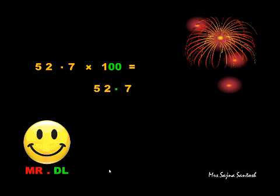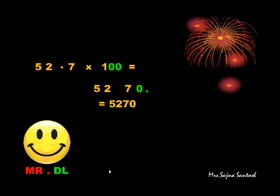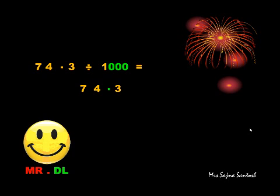Fifty-two point seven multiplied by hundred. Again, multiplication — I'll be jumping to the right, and two friends, two zeros in hundred, so I have to jump twice. But here you can see I have only one place to jump. As I told you, my friend zeros will come to help me when I don't have enough place to jump. So the answer is five thousand two hundred and seventy.